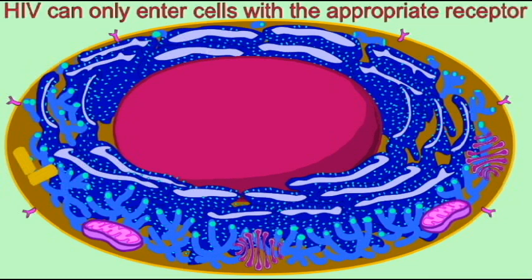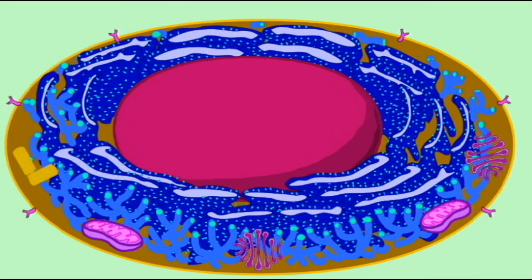The virus HIV cannot infect every organism, nor can it infect every cell in the human body. The virus needs to enter human cells and does so by binding to a receptor and a co-receptor. The receptor is known as CD4, so that only cells with the CD4 receptor can be infected by the HIV virus.